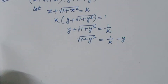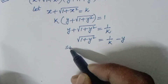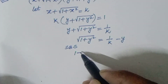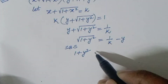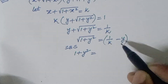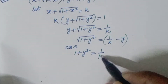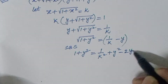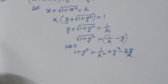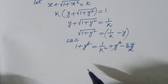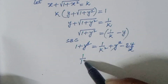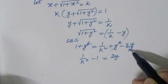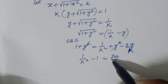Now squaring on both sides. The square and square root will get cancelled, giving 1 + y² on the left. On the right we apply the (a + b)² = a² + b² − 2ab formula. So 1 + y² = (1/K)² + y² − 2y/K. The y² terms cancel, leaving 1/K² − 1 = 2y/K.